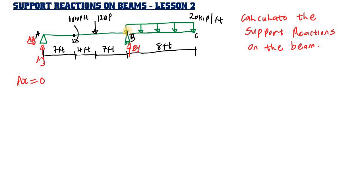We are having a distributed load, so we need to replace it with an equivalent force. To do that, we take the area of this rectangle — the height multiplied by the width. The width is 8 feet and the height is 20, so 20 multiplied by 8 gives us 160.